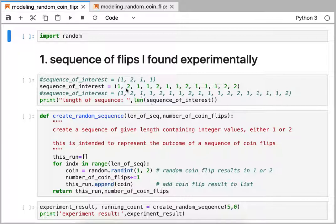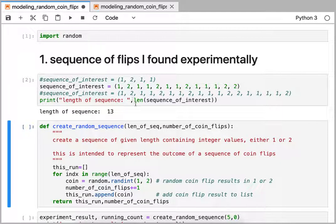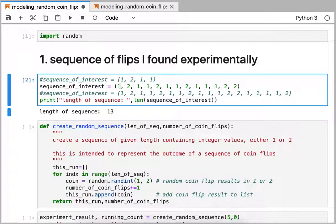In this notebook I have a Python script where I have a sequence of interest of 13 coin flip outcomes where I've got heads and tails respectively, or 1 and 2 outcomes for the coin flip.